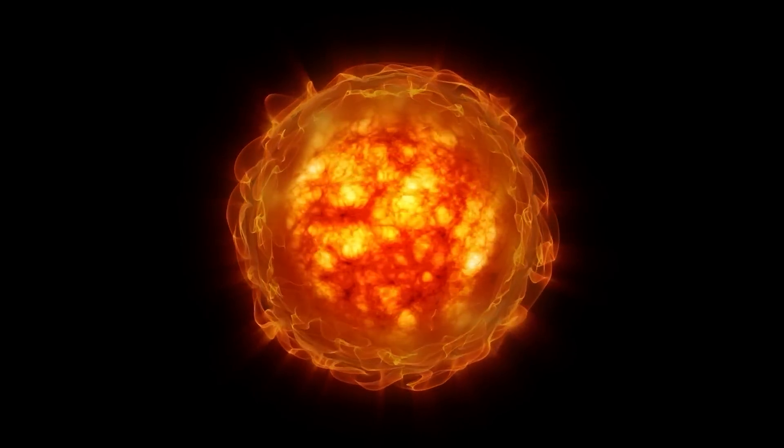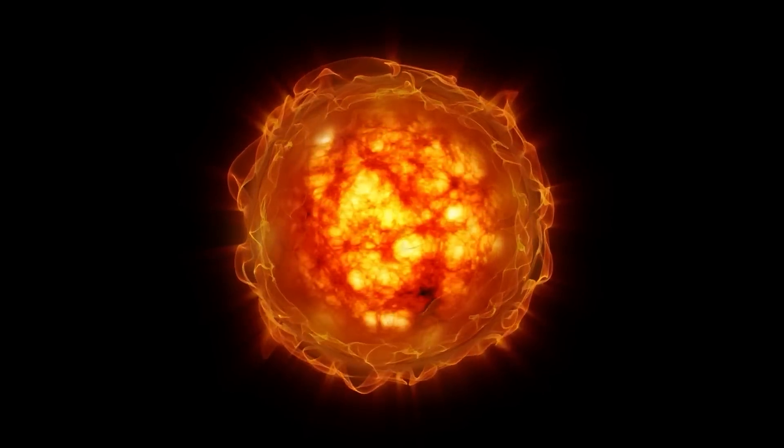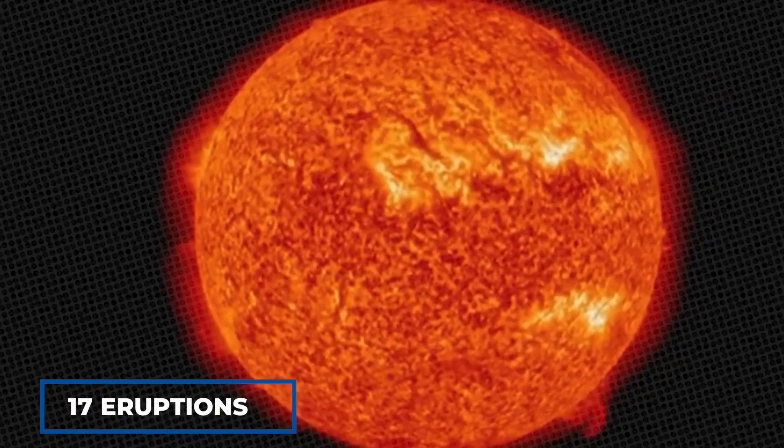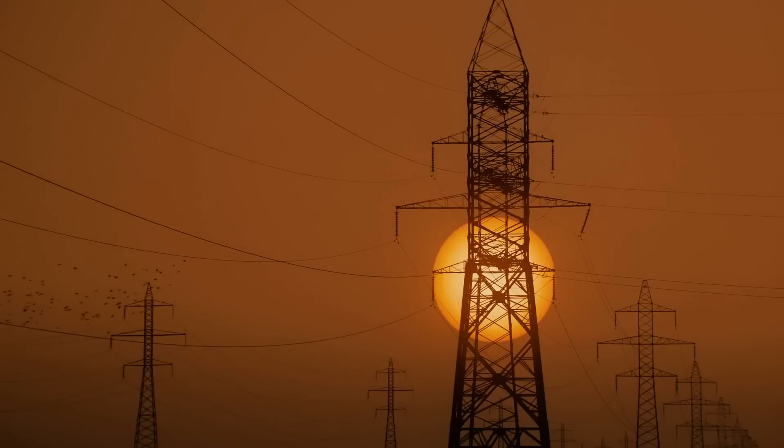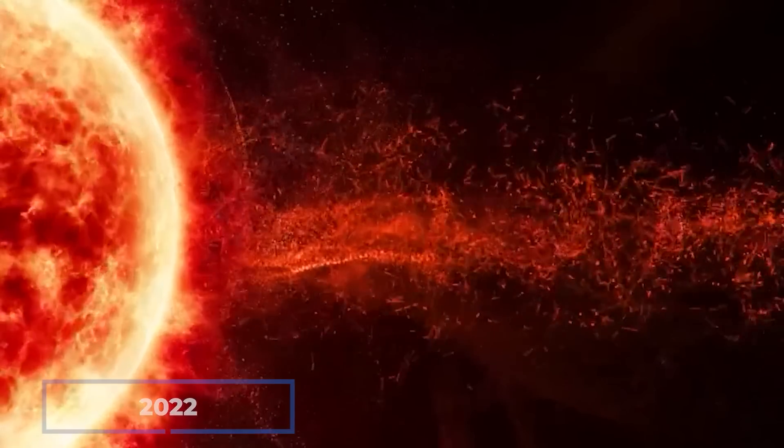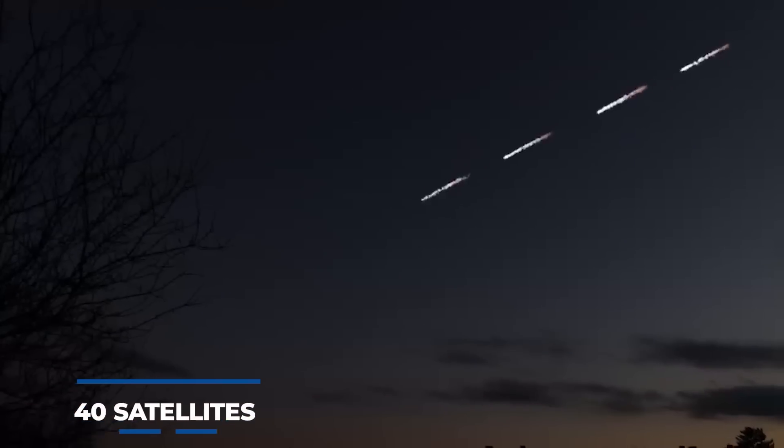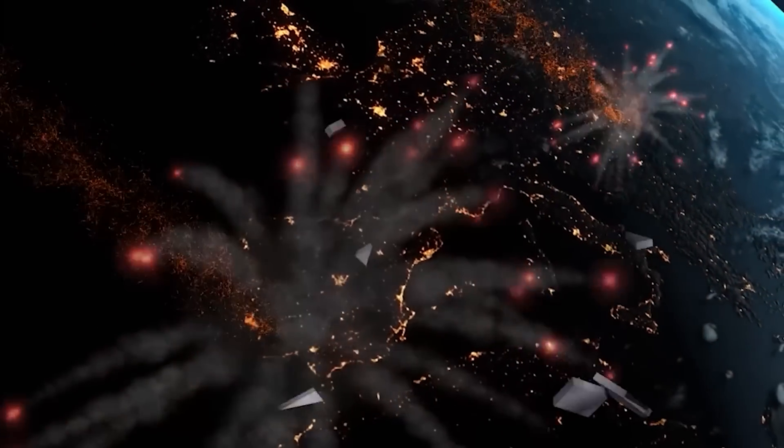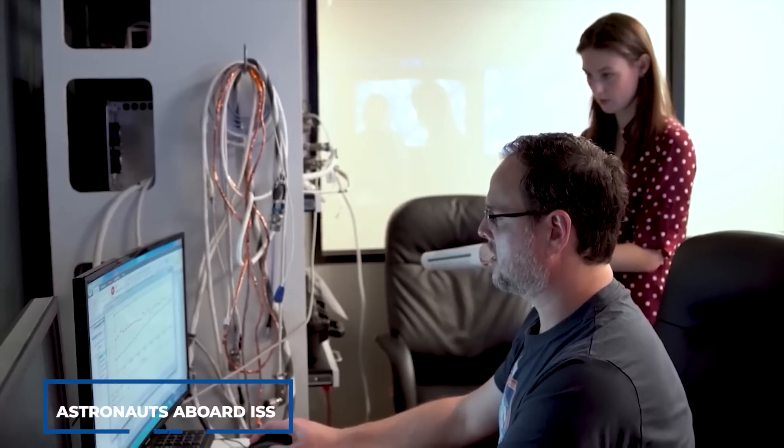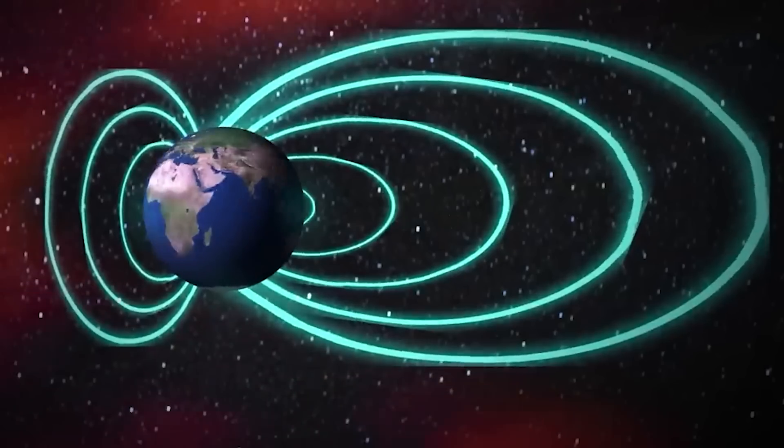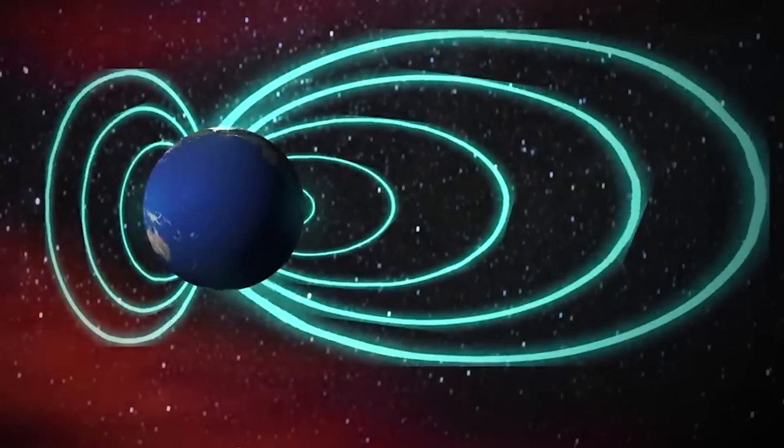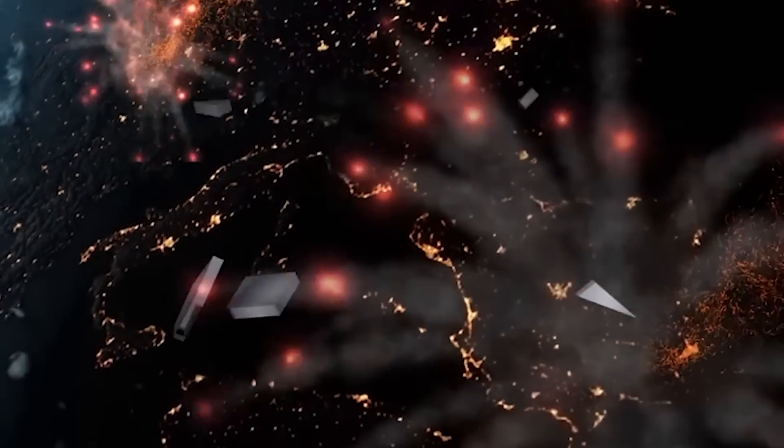To make matters worse, recent reports show that the sun has been more active than ever, with 17 eruptions detected in a single area, two of which hit Earth at nearly 2 million miles per hour. This poses a real danger to communication networks and power grids, as we saw in early 2022 when SpaceX lost 40 satellites due to a geomagnetic storm. As astronomers and astronauts aboard ISS continued to study and monitor CMEs and solar flares, it becomes clear that they must take precautions to protect our technology and prevent potential disasters.